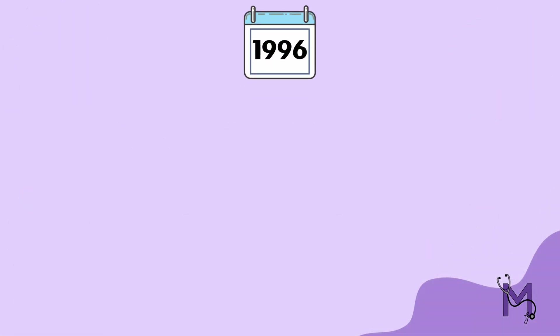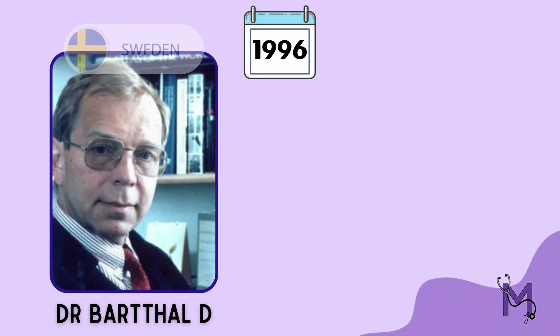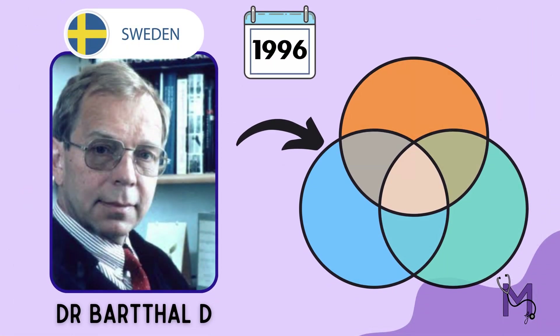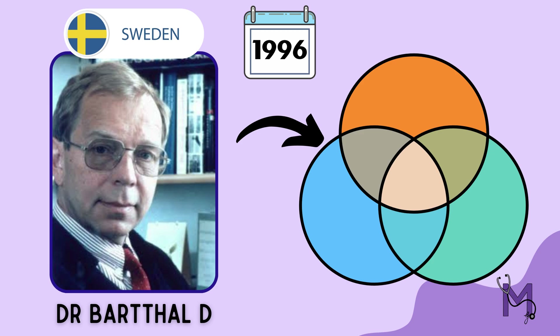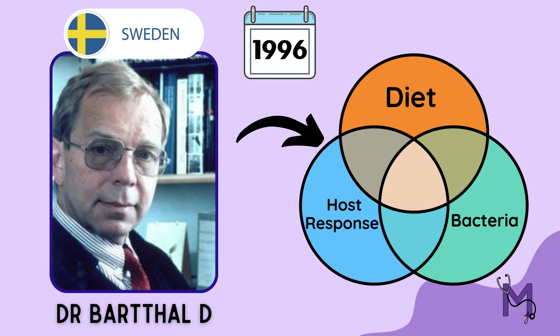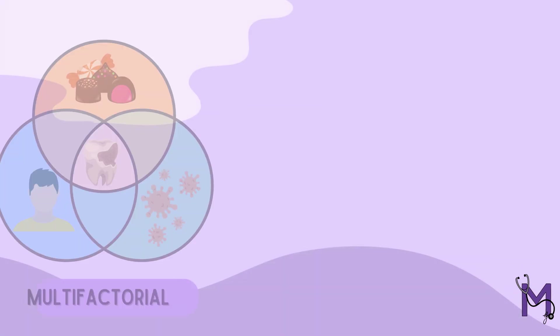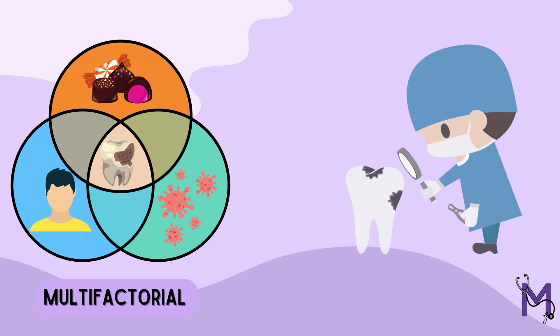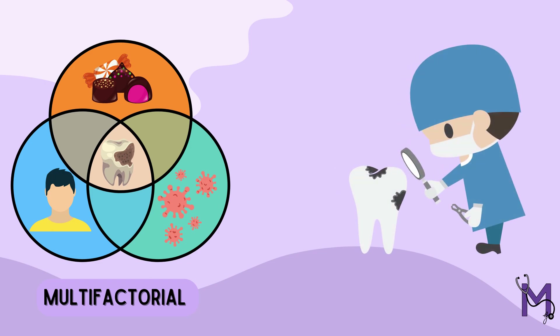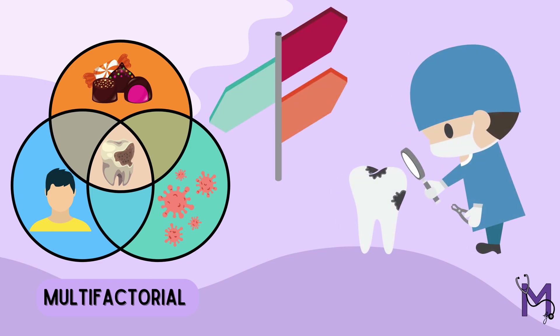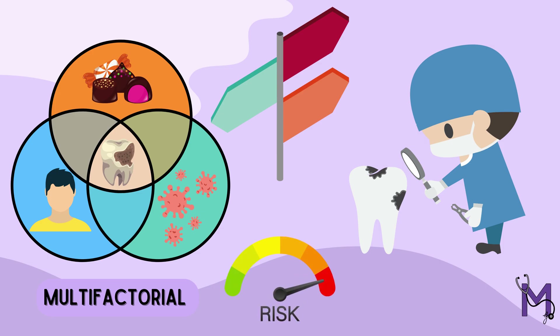In 1996, Brad Hall D. from Sweden proposed a model which would illustrate the interaction between bacteria, diet, and host response, a combination of which leads to dental caries. Not only did it help with a better understanding of the multifactorial aspects of dental caries, but also helped by acting as a guide in the attempts to estimate the caries risk.